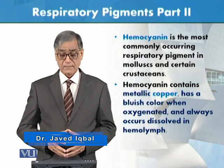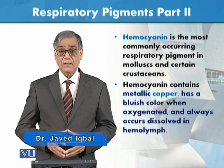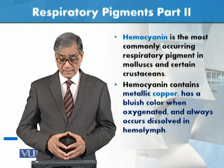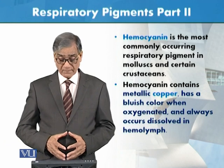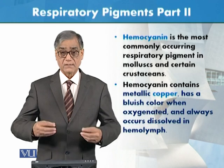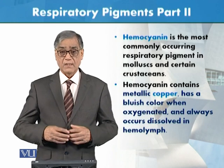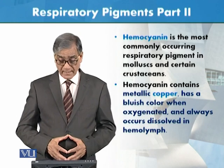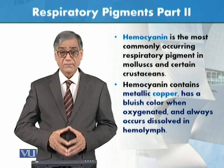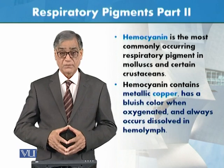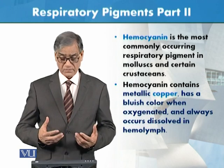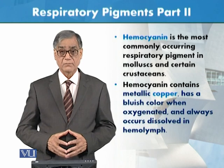Hemocyanin contains metallic copper, not iron as we find in hemoglobin. It is a bluish color when oxygenated — when it comes in contact with oxygen, it becomes blue. It is always dissolved in hemolymph, because these are invertebrates. In invertebrates there is hemolymph, and in hemolymph there is hemocyanin.